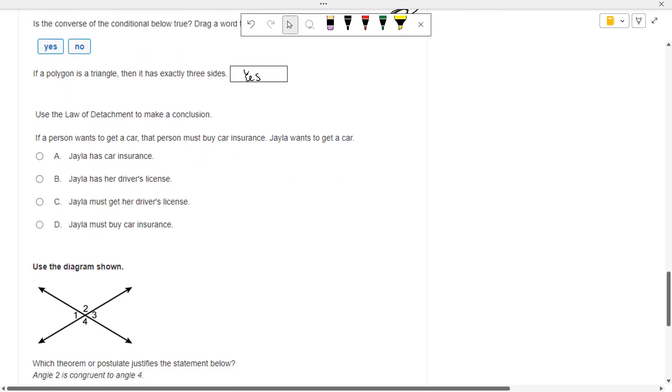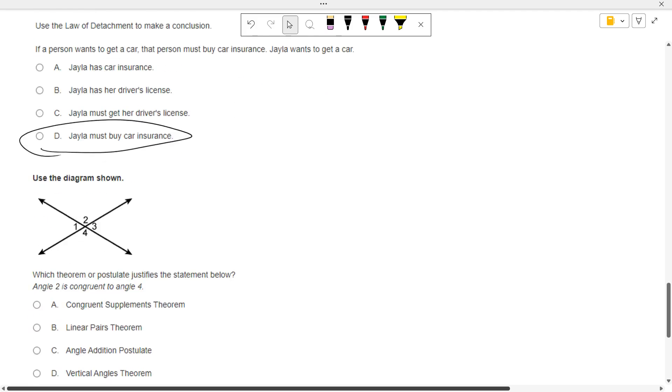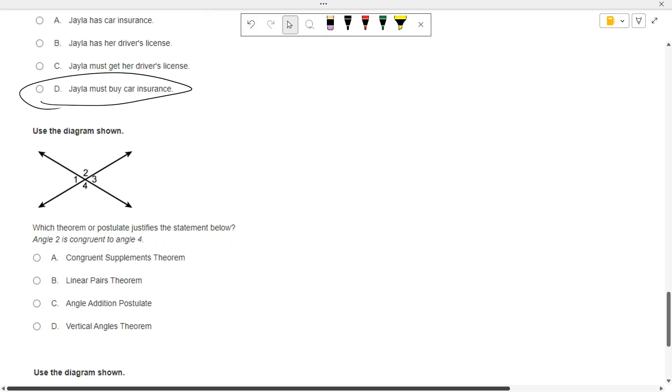Law of detachment. If a person wants a car, a person must buy insurance. Jayla wants a car. So what does Jayla have to do? Jayla must buy car insurance. Not she already has car insurance. She must buy car insurance.